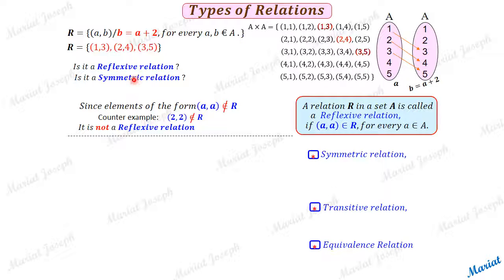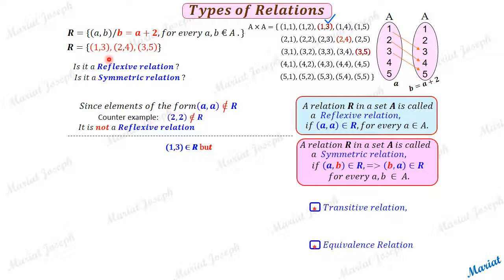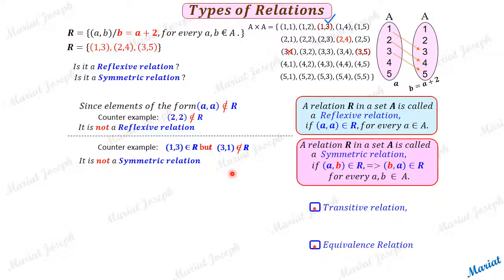Is it a symmetric relation? A relation R in set A is called symmetric if (a, b) belonging to R implies (b, a) also belongs to R for every a and b in A. Taking the pair (1,3): yes, it belongs to R, but we cannot find (3,1) in it. This acts as a counter example — it goes against the definition. Hence, this relation is not a symmetric relation.